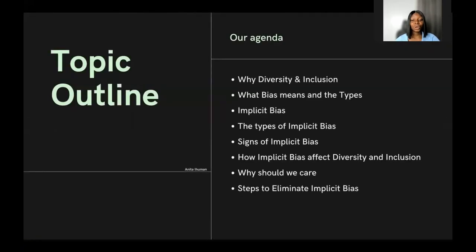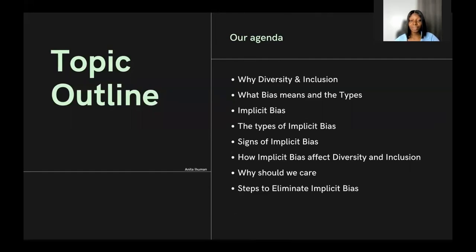During this talk, we're going to look at why diversity and inclusion in open source matters, what bias means and the types of bias, implicit bias and its types, the signs of implicit bias, how implicit bias affects diversity and inclusion in open source, why we should care about this topic, and the steps you can take towards eliminating or addressing implicit bias.